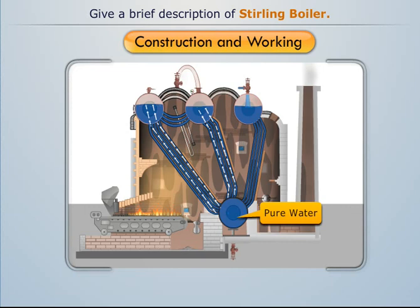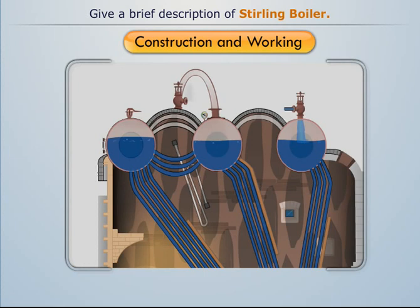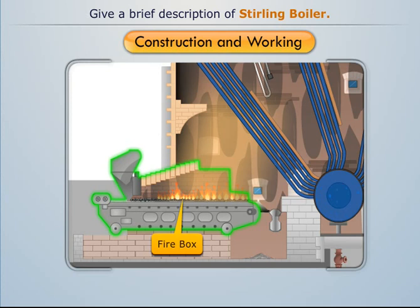The steam drums are also connected with each other by equalizing tubes and circulating tubes. The circulating tubes equalize the level of water in the drums, while the equalizing tubes equalize the level of steam in the drums. The firebox is situated at the bottom left corner of the boiler settings, where solid fuel is burnt over a grate to produce hot flue gases.